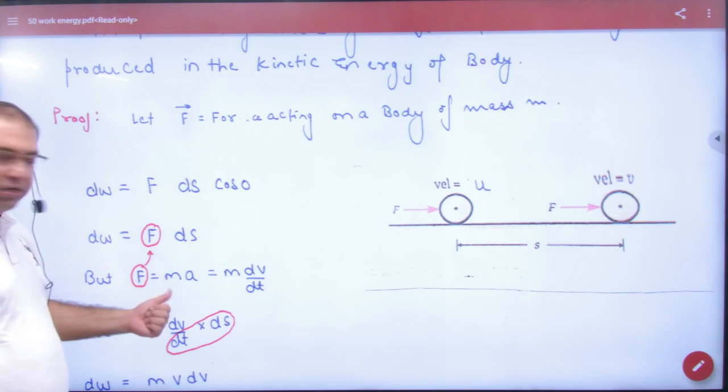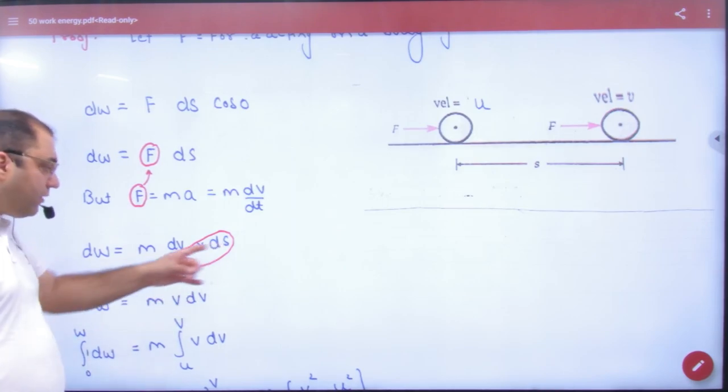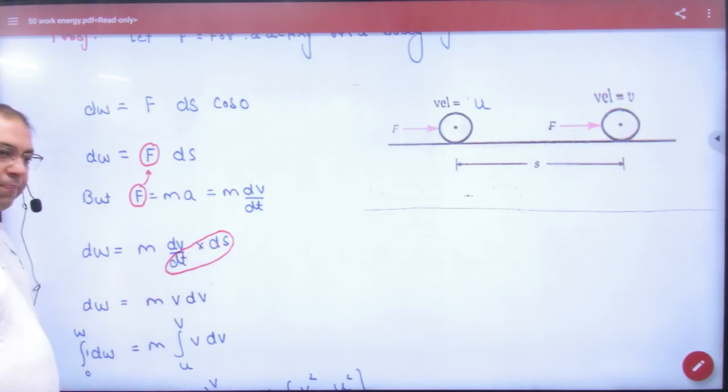What is the force? Mass into acceleration. What is the acceleration? Dv by dt. The force took over here. So this time is gone. Ds by dt, what is the velocity of V? Now the limit change.